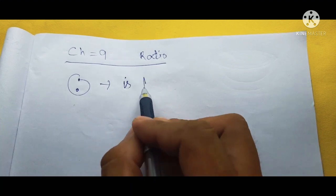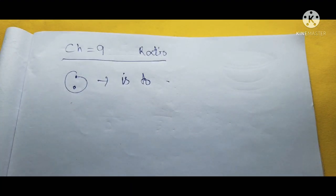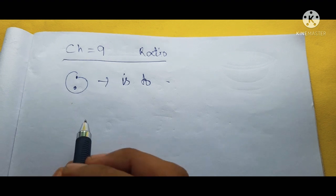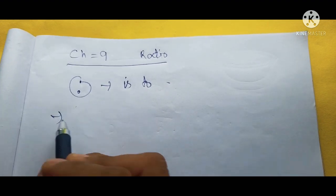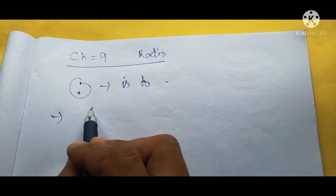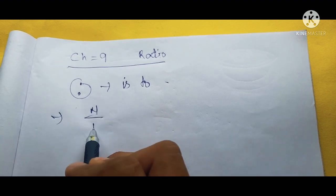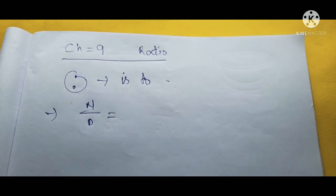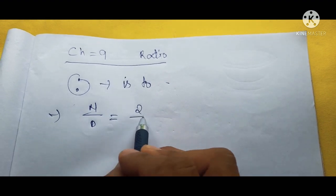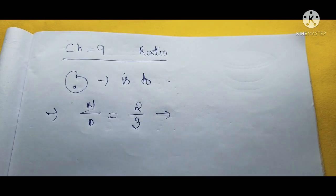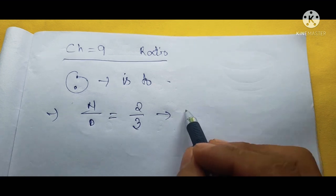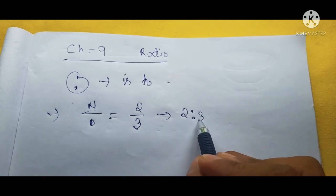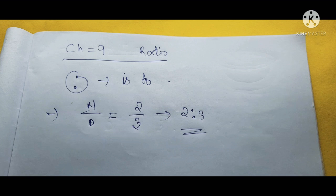When we are going to do the sums and find the ratio, we will make them into a fraction — that is, numerator by denominator. For example, 2 by 3: when we make it into a ratio, it will be 2 is to 3. So this is the example of ratio.